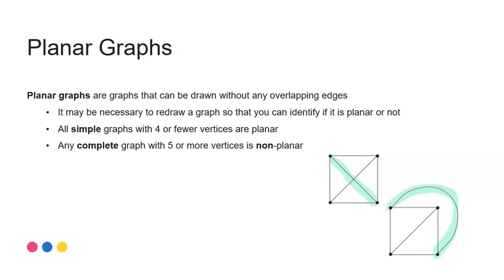So sometimes you need to think about redrawing a graph so that you can check whether it's planar or not. And we'll look at some more examples of that in this video. A couple of things that are really handy to note: all simple graphs with four vertices or fewer are planar. Remember, a simple graph is one that has no loops and no multiple edges. Second thing is that a complete graph with five or more vertices is non-planar. It's not possible to draw them as a planar graph.